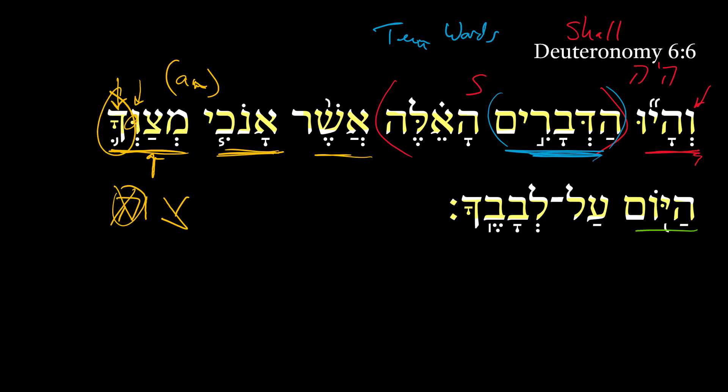And then we get 'today' — 'which I am commanding you today.' And then we get the prepositional phrase simply 'upon your heart.' This is lev with a 2MS suffix: 'upon your heart.'